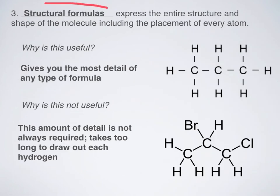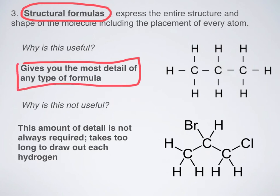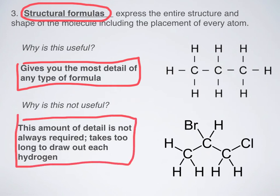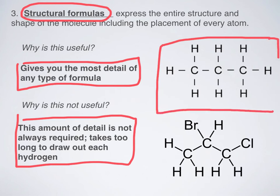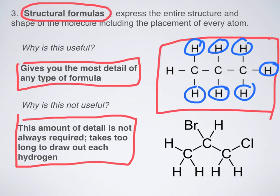Next up, we have structural formulas. Structural formulas express the entire structure and shape of the molecule, including the placement of every single hydrogen atom. Why is this useful? This gives you the most detail of any type of formula. But why is it not useful? This amount of detail is not always required, and it takes too long to draw out every single little hydrogen in a molecule. Draw this in your box — this is the structural formula for propane. Compare that drawing to the condensed structural drawing — this one takes way longer because we actually have to go in and draw every single tiny hydrogen.